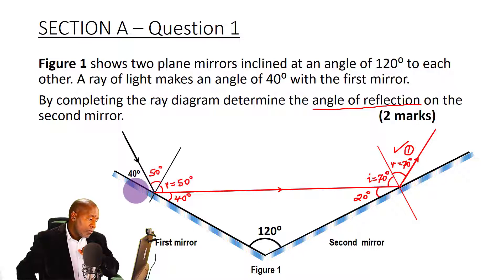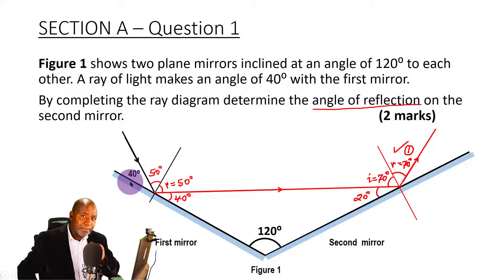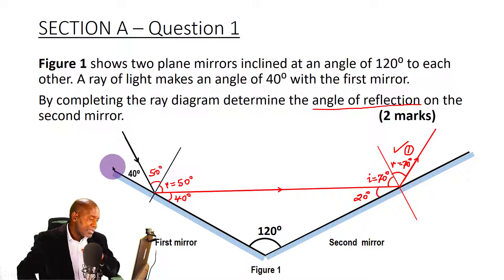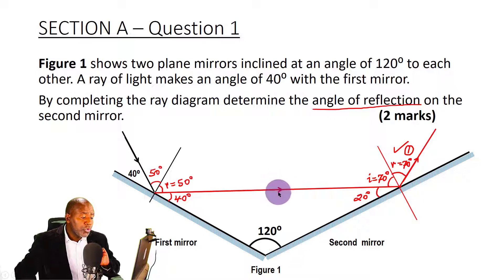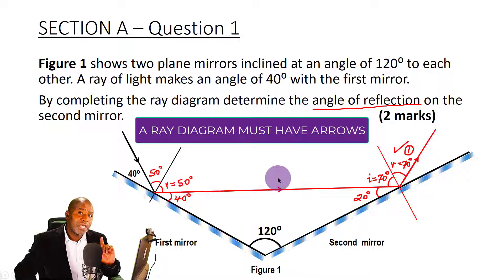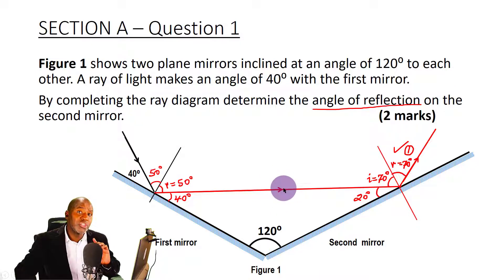Don't get confused when they give you the angle the incident ray makes with the mirror. Many students think that angle is the angle of incidence — it is not. It is simply the angle that the incident ray makes with the mirror surface. The angle of incidence is the angle between the incident ray and the normal. Also, when asked to complete the ray diagram, it is important that you show arrows. A ray diagram is never complete if arrows have not been included, as they show the direction of travel of the light energy.